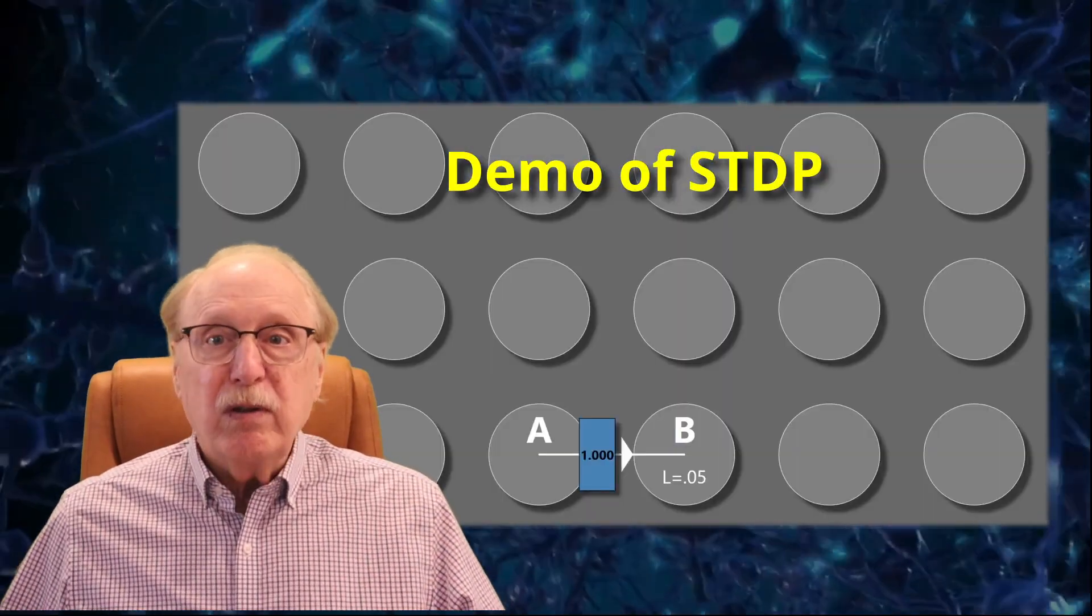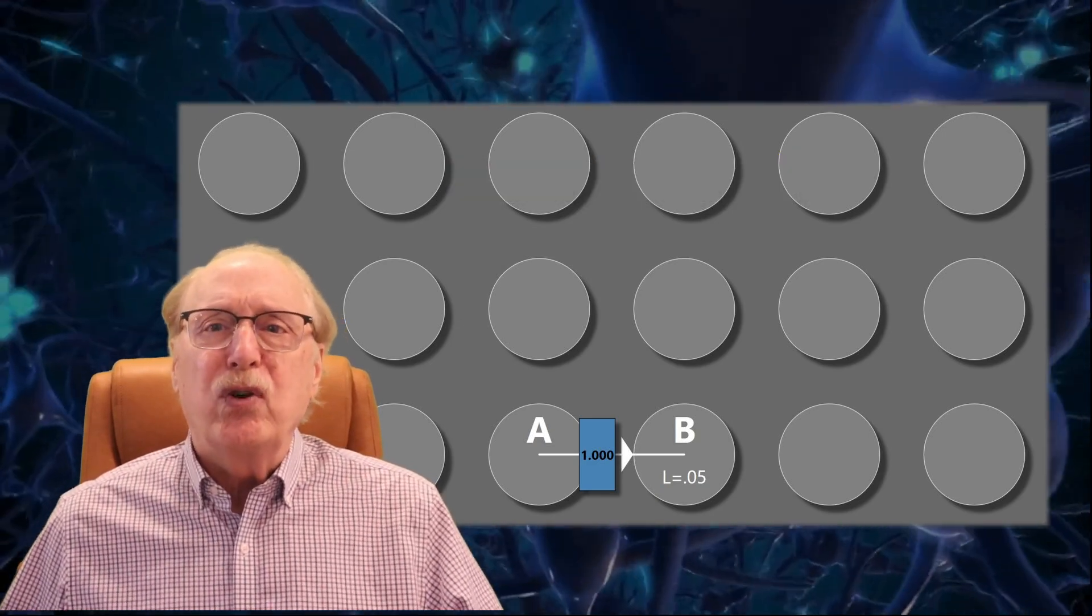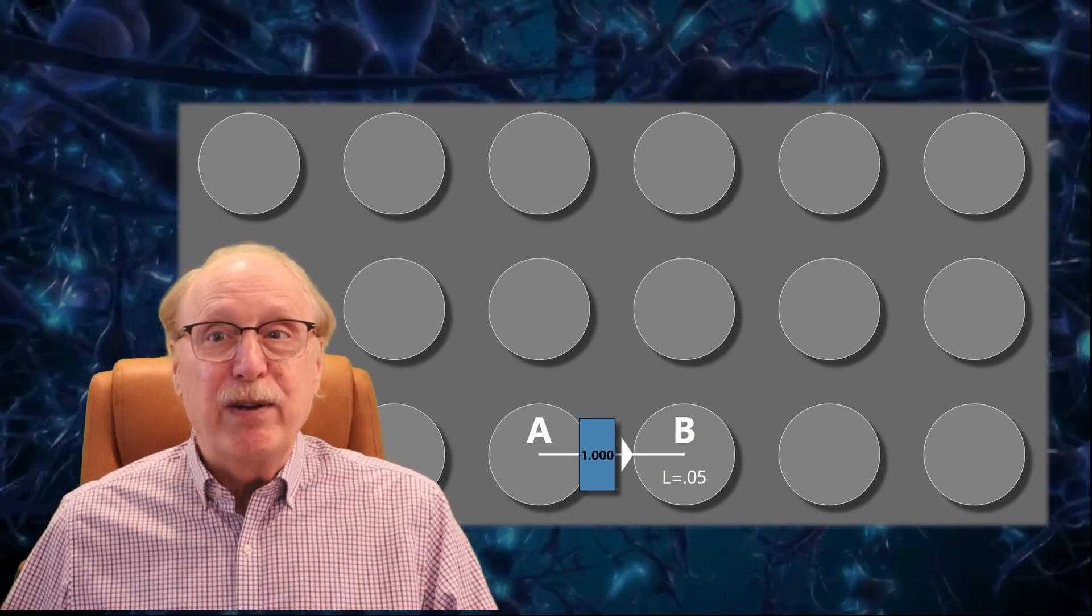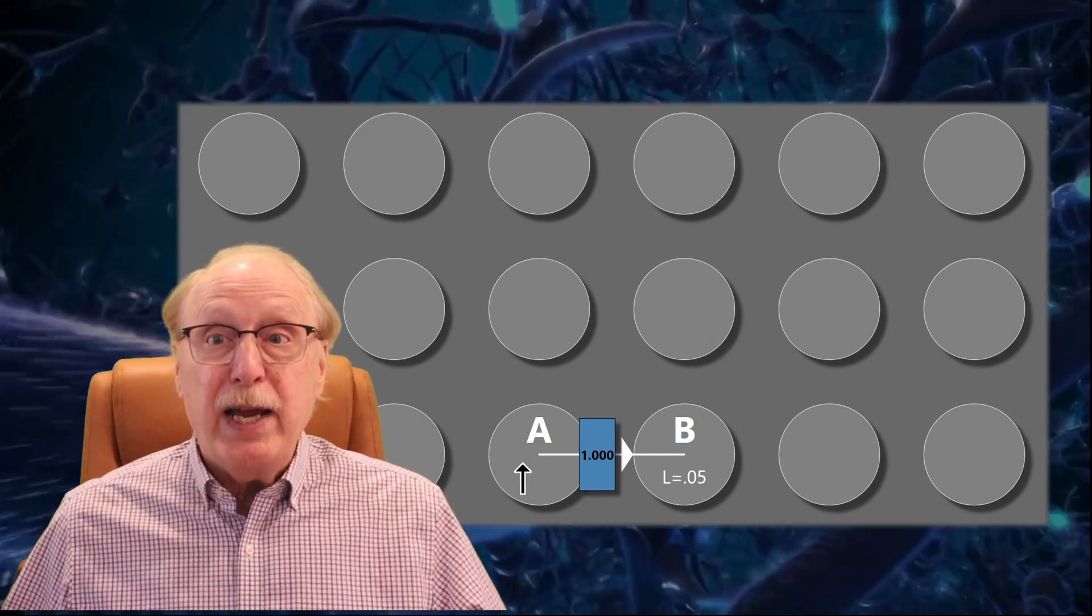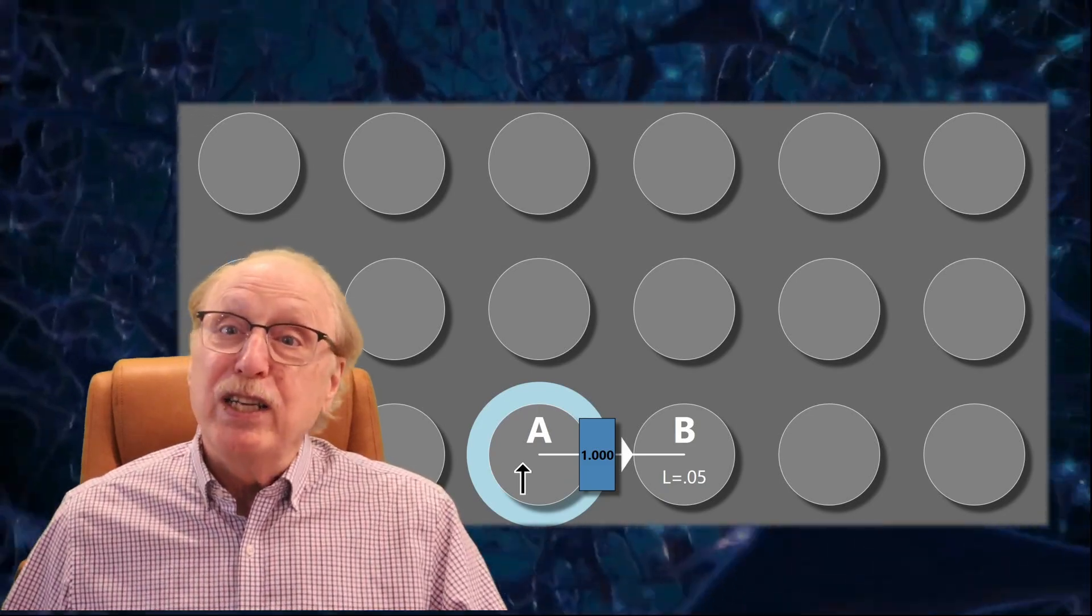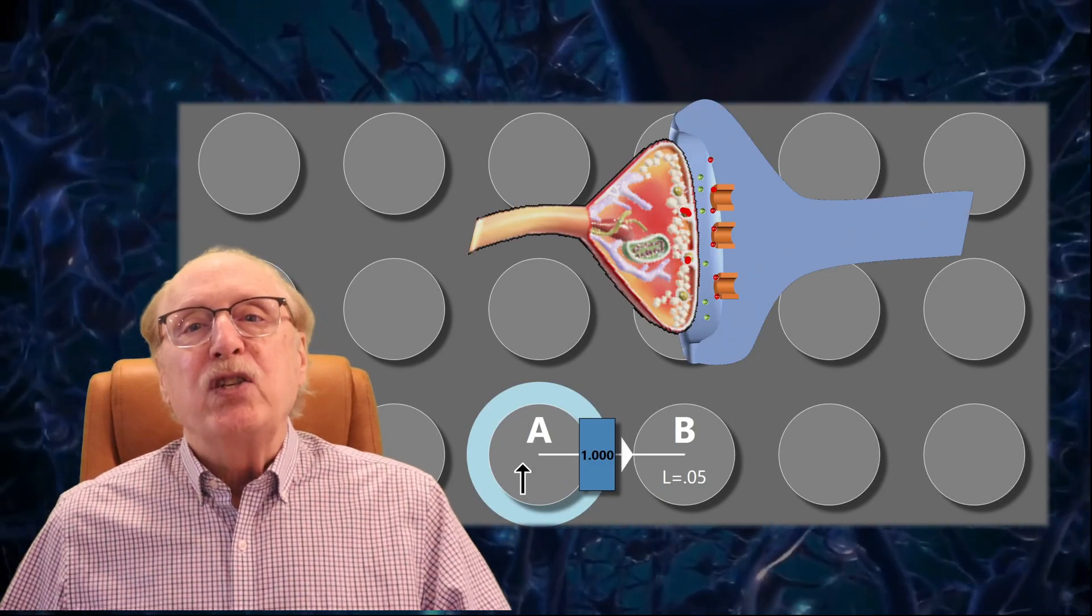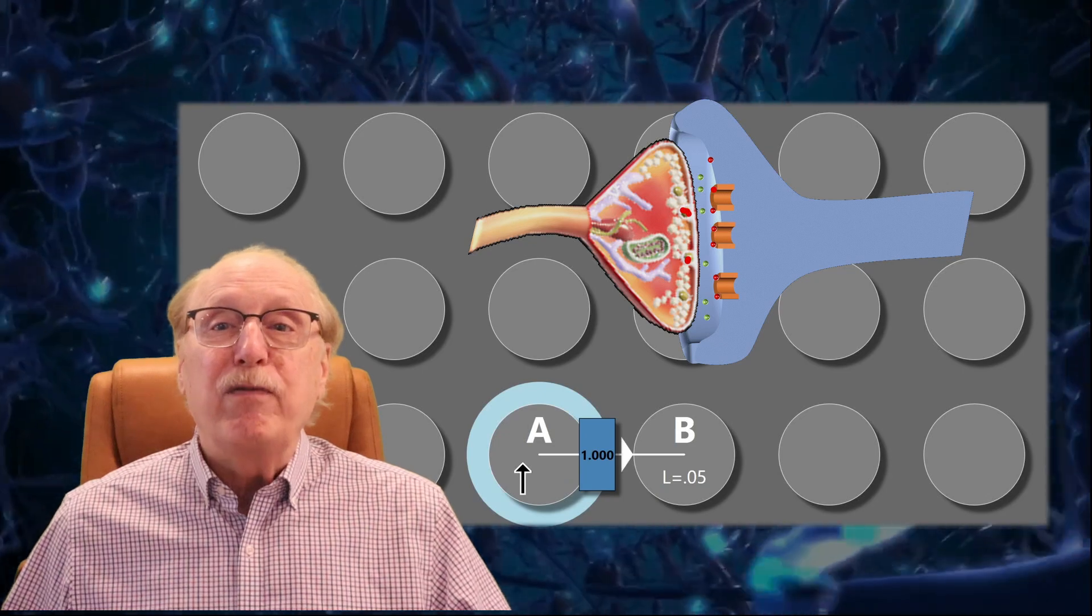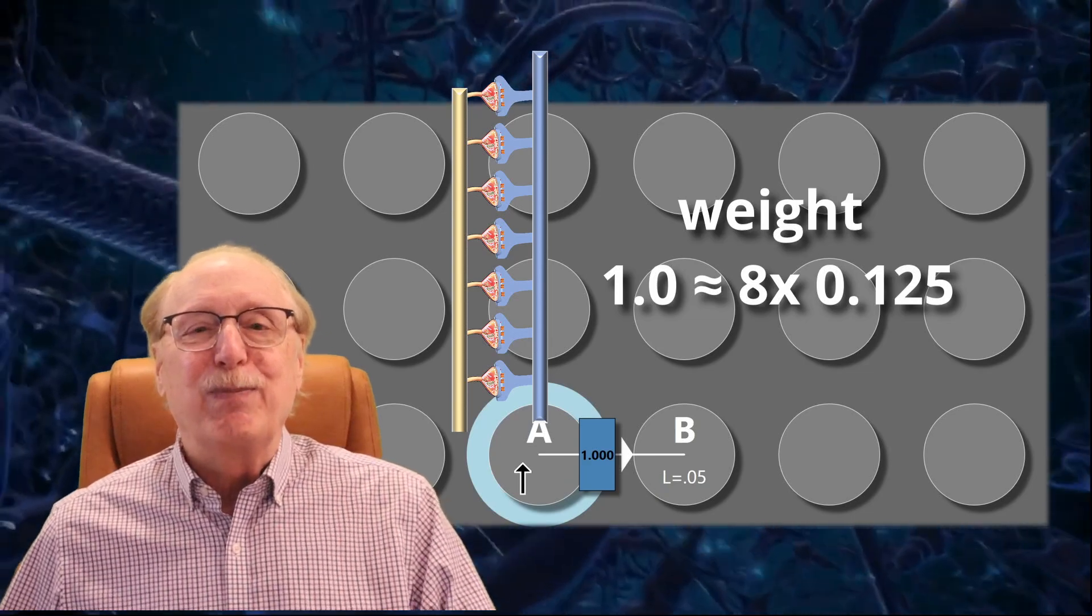To more clearly illustrate the action of a Hebbian synapse and its limitations, let's simulate two neurons labeled A and B connected by a Hebbian synapse which currently has a weight of 1. You can see that if I fire neuron A, neuron B fires shortly thereafter. Since the synapse weight is already 1, the weight remains unchanged. Since actual weights do not exceed 0.15, we'll say that my synapses of weight 1 represent 8 synapses in parallel.